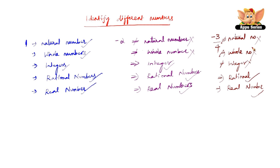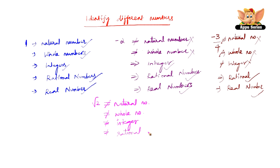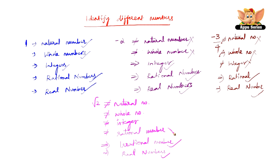Now let us take another number: root 2. Now root 2 is definitely not a natural number, definitely not a whole number, not even an integer, and also not a rational number. Therefore root 2 is a real number, it is an irrational number, but not a rational number, not an integer, not a whole number, not a natural number.